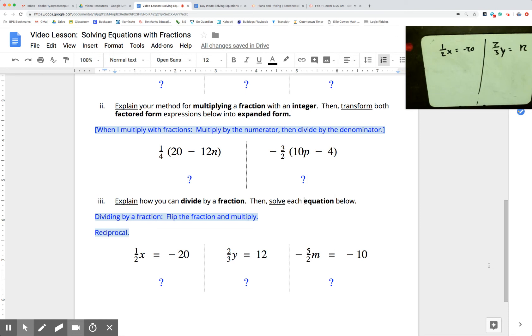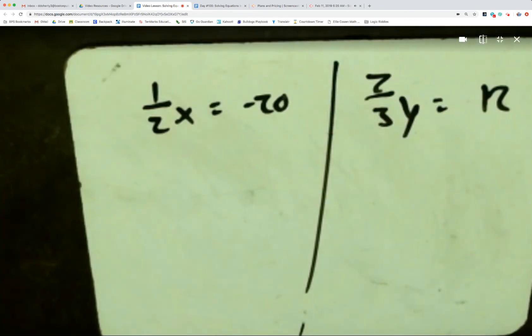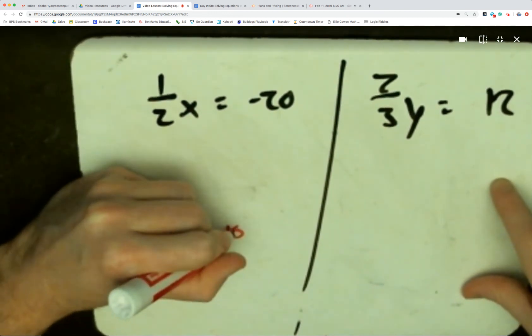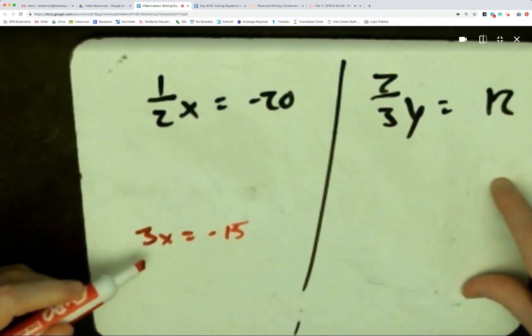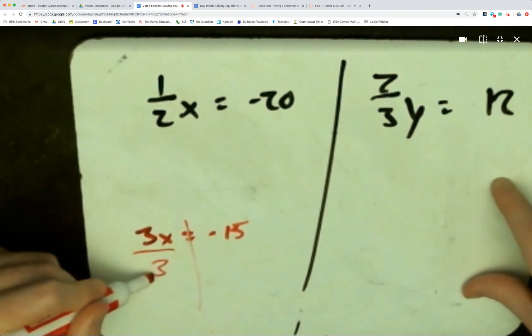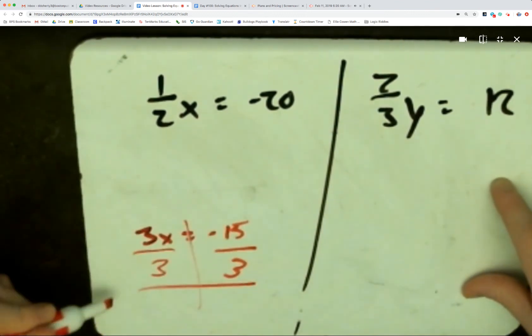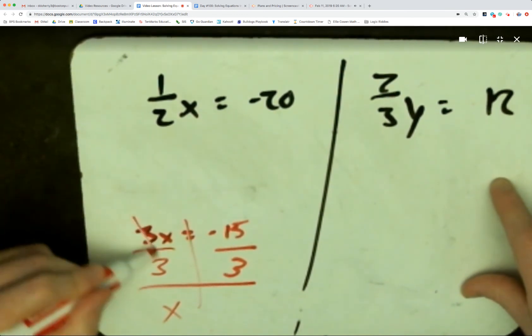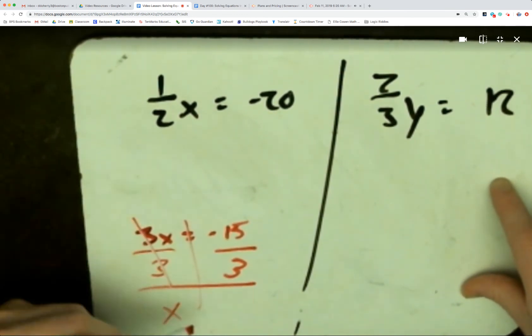This has to do with solving equations. Whenever x is multiplied by a number, the inverse operation of multiplication—the opposite of multiplying—is dividing. So on this whiteboard, if we had an equation that said 3x equals negative 15, the opposite of multiplying would be to divide. If we use the inverse operation instead, you would divide by 3 because that's the opposite of multiplying by 3.